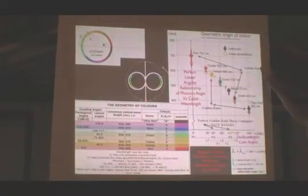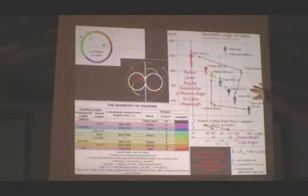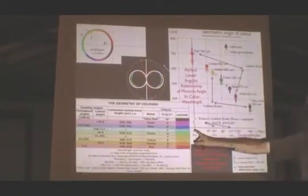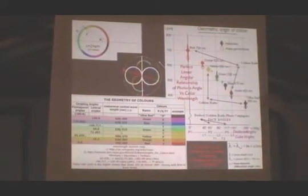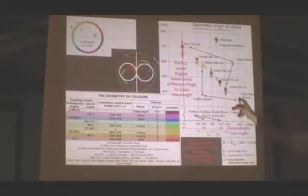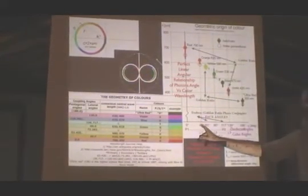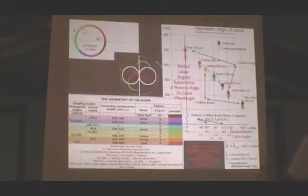If you take the exact frequencies of the primary colors precisely and convert that to angular measure — 0 to 180 degrees tilt — it turns out that the colors we call the primary colors are precisely 0, 45, 90, 135, and 180 degrees. Cube simple, easy.